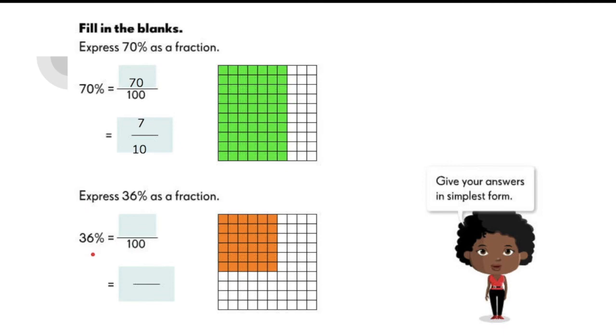And the next one, we got 36%. Change this into fraction. It's the same as 36 over 100. Remember, don't forget to simplify your answer, and you will get 9 over 25.